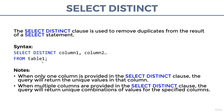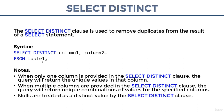NULLs are treated as a distinct value by the SELECT DISTINCT clause. We haven't covered nulls yet, but later in the course we'll take a close look at them. A null indicates the absence of data — if we have a cell with a null, we can think of it as something which is unknown. Let's go through some examples using SELECT DISTINCT. Here we are selecting a few columns from a table called hotel_rooms.